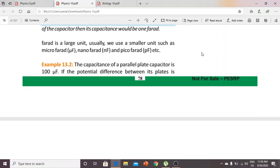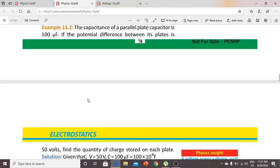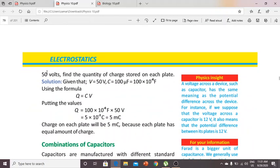Like microfarad, nanofarad, and picofarad. Example: The capacitance of a parallel plate capacitor is 100 microfarad. If the potential difference between its plates is 50 volts, find the quantity of charge stored. We will use the formula Q equals CV.